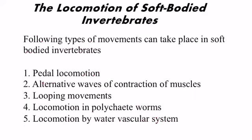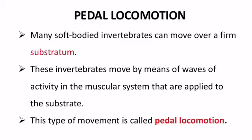We will study each type one by one. The first one is pedal locomotion. Many soft-bodied invertebrates can move over a firm substratum. These invertebrates move by means of waves of activity in the muscular system that are applied to the substrate. This type of movement is called pedal locomotion.